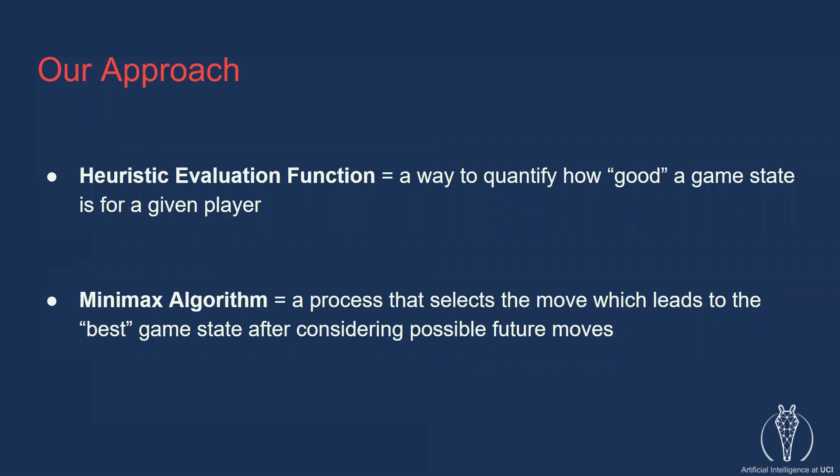The second component is the minimax algorithm. We can think of it as a process that selects the move which leads to the best game state after considering possible future moves. We will cover exactly how this algorithm works soon, but first, let's make sure we understand the heuristic evaluation function.